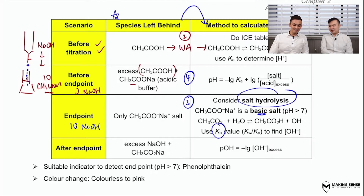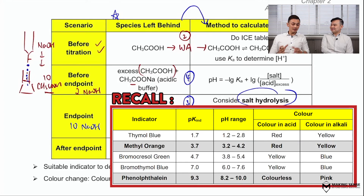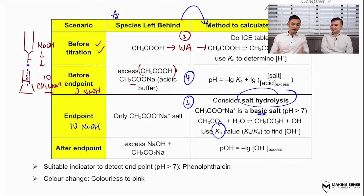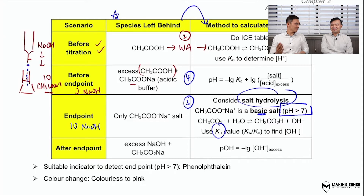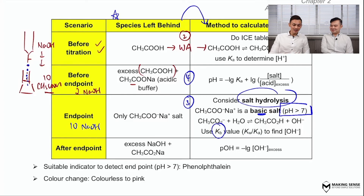William, what indicator will we be using here? Remember, the indicator depends on the nature of the salt. This salt is going to be basic — the pH is greater than 7. So we must choose an indicator that works in the basic region. In our case, we have to choose phenolphthalein as the indicator. Alright, so after we go beyond the end point — let's say we add in 12 moles of NaOH — NaOH is going to be the excess reagent.